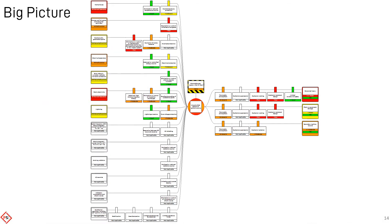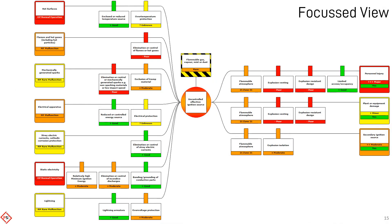Showing all the possible ignition sources and associated prevention or control measures, plus all the potential mitigation measures, gives a holistic view of each scenario and can be used to demonstrate that all aspects have been considered. Using advanced filtering within Bowtie XP, the scenario can be condensed into a focused view showing only the credible or applicable elements.